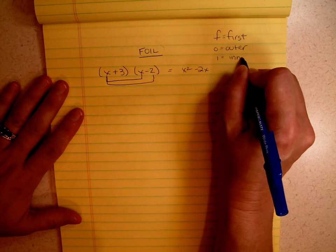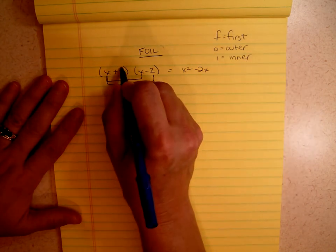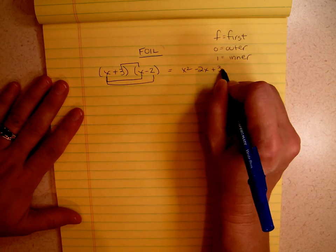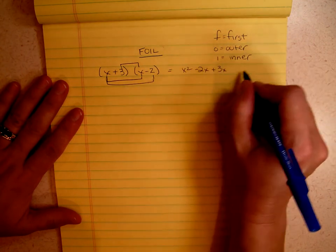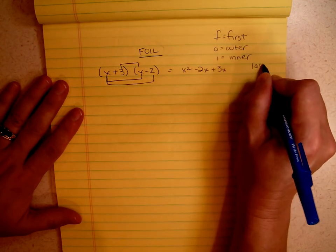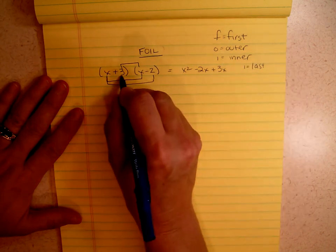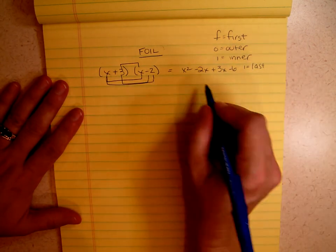I is inner. So what are my inner numbers? They're 3 and x, and if I multiply 3 and x, I get 3x. And L stands for last. So the last is 3, and the last is negative 2, and that gives me negative 6.